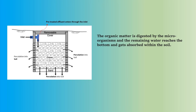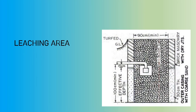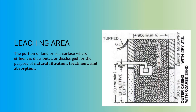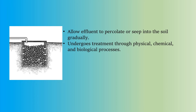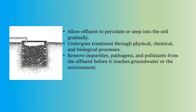The term leaching area refers to the portion of land or soil surface where effluent, liquid waste or wastewater, is distributed or discharged for the purpose of natural filtration, treatment, and absorption. The primary function of a leaching area is to allow the effluent to percolate or seep into the soil gradually, where it undergoes treatment through physical, chemical, and biological processes. These processes help remove impurities, pathogens, and pollutants from the effluent before it reaches groundwater or the environment.